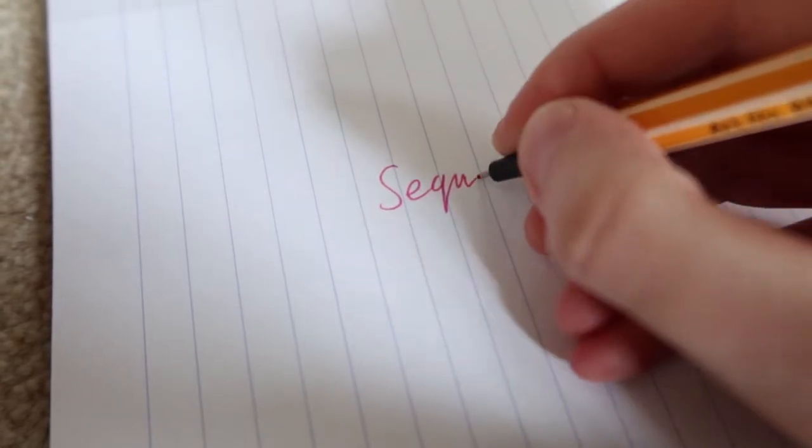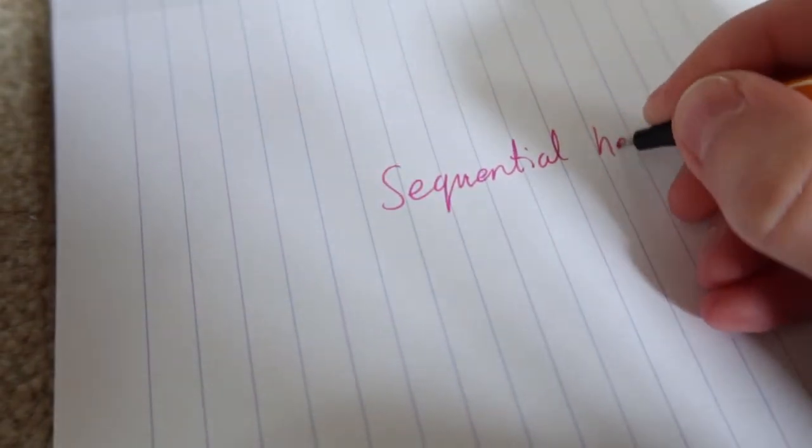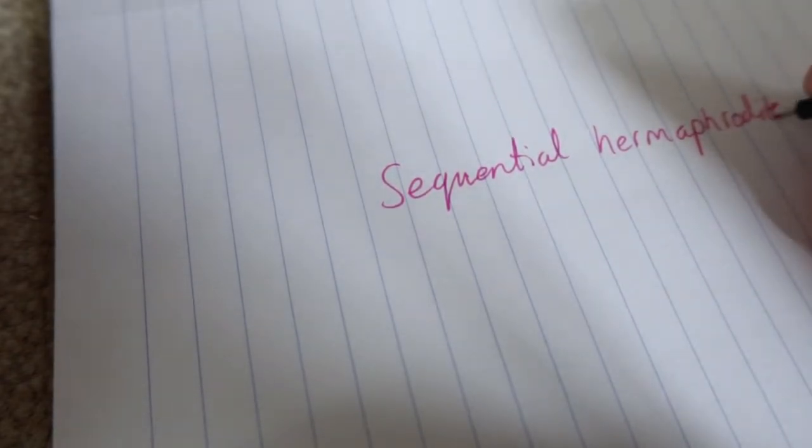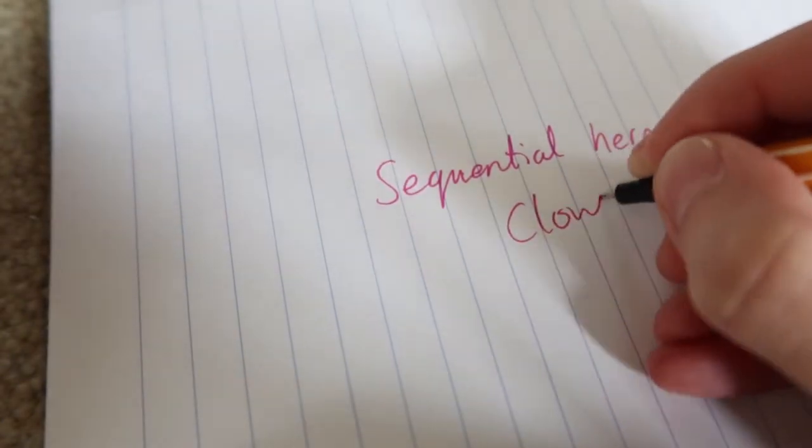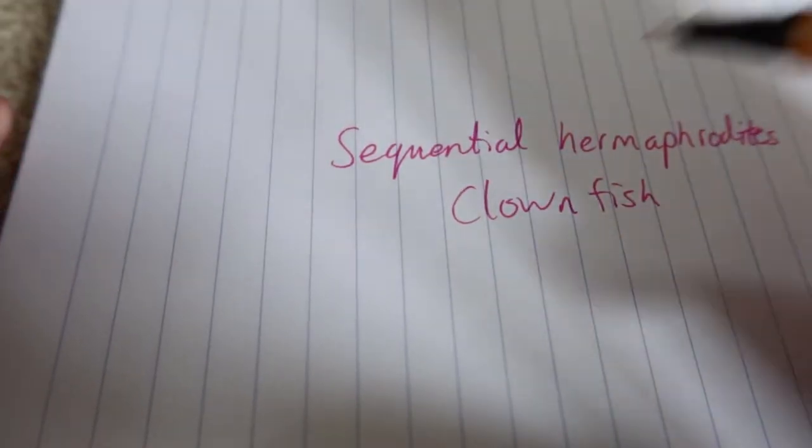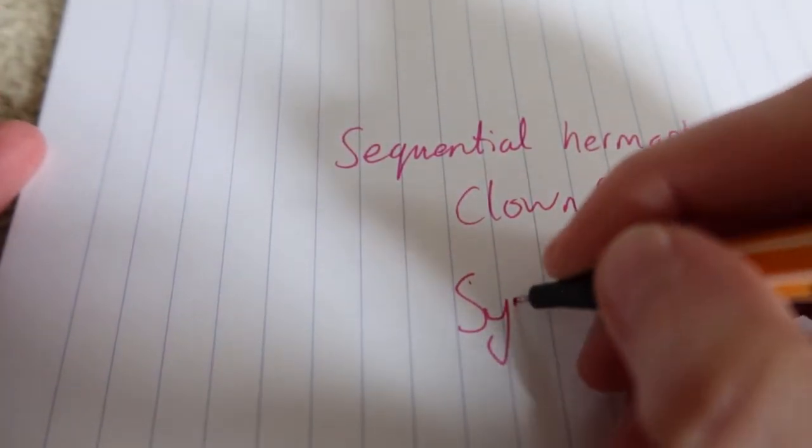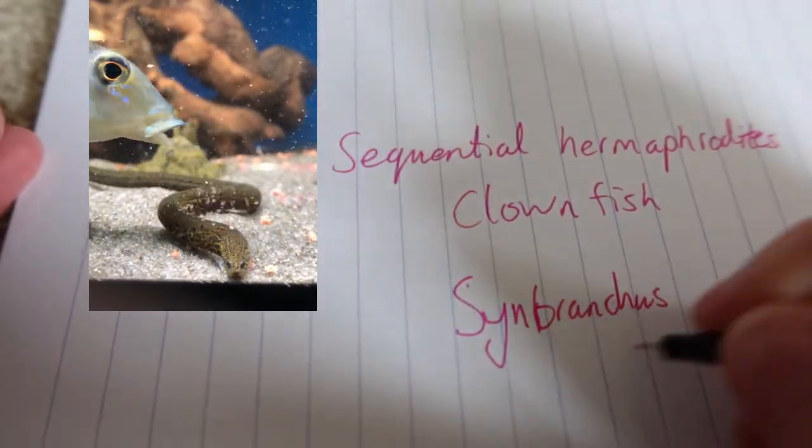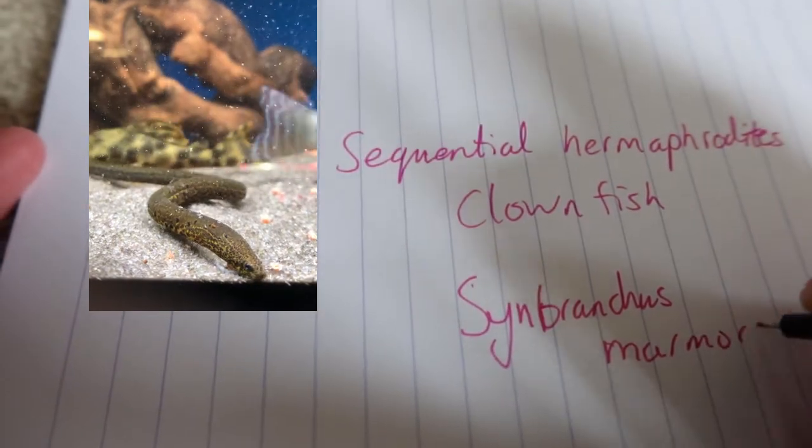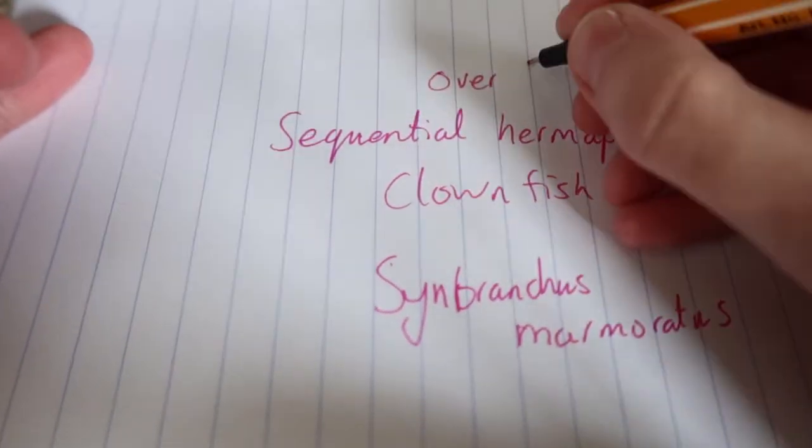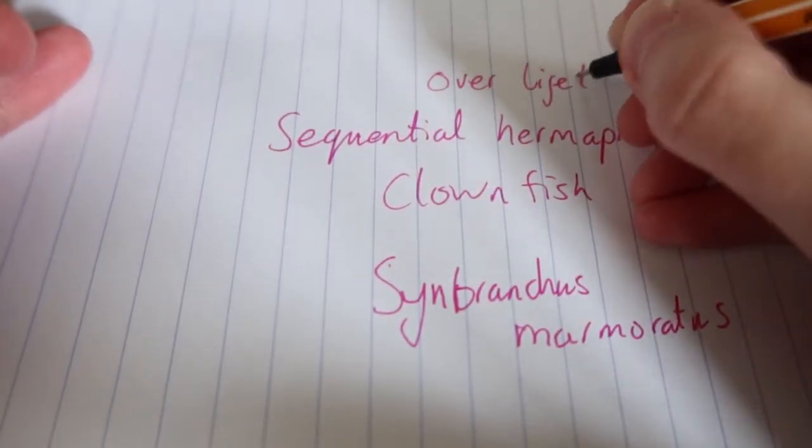The next type is sequential hermaphrodites. The most famous would be the clownfish, but in freshwater there's a few cichlids and also Synbranchus, a type of swamp eel. These are hermaphrodites over their lifetime. These will switch from male to female or vice versa depending on the species.